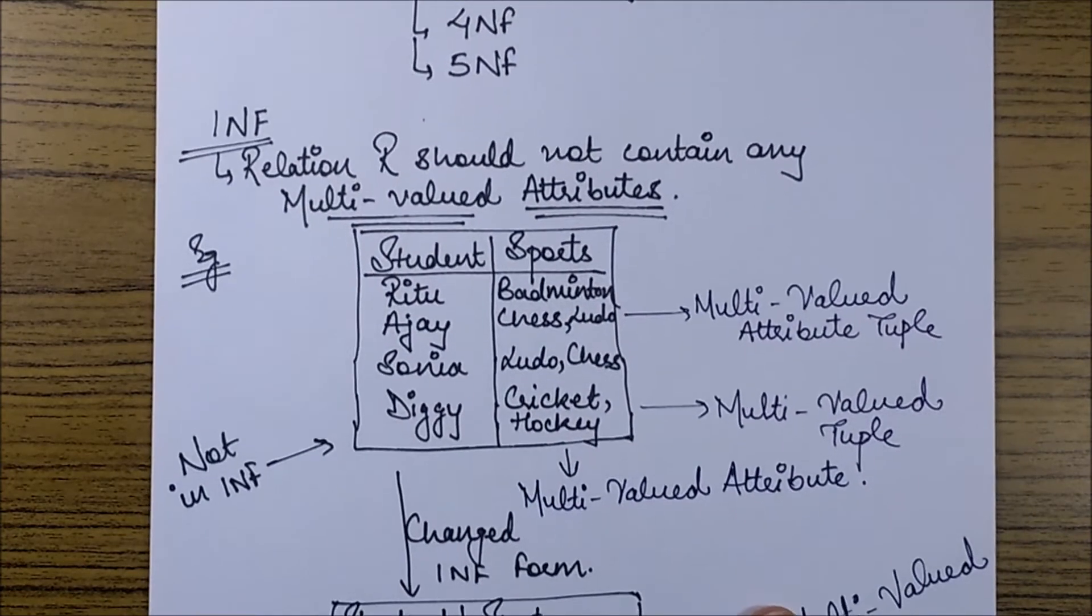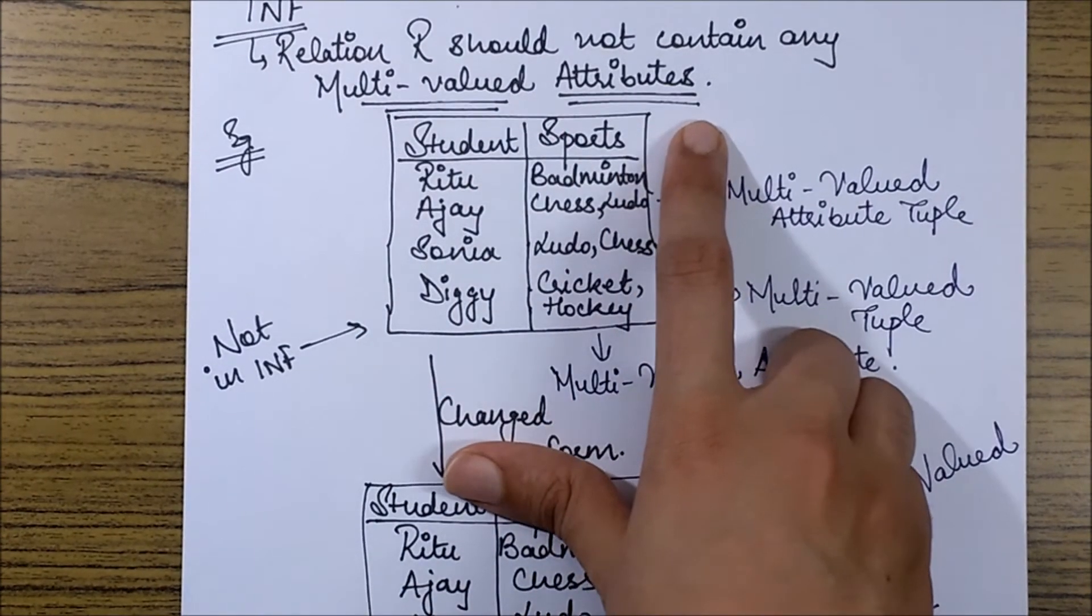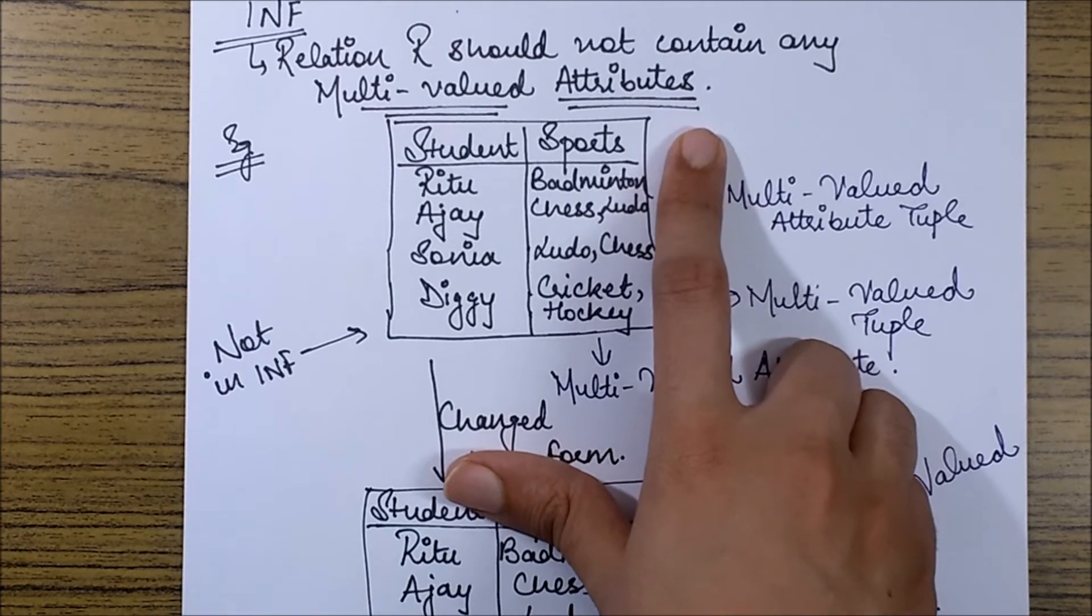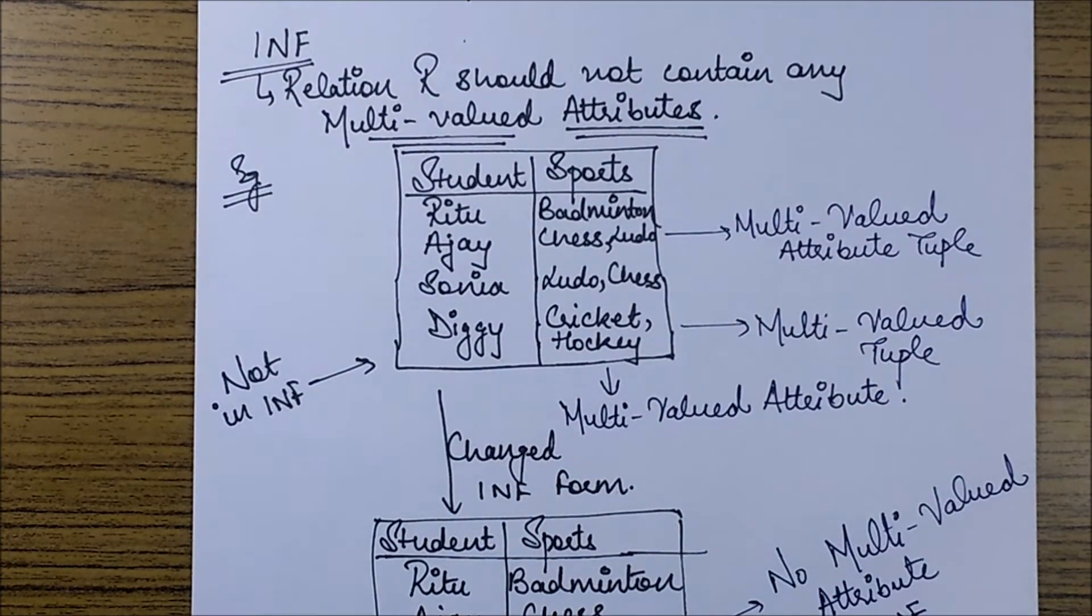Now a relational schema R is said to be in 1NF if it does not contain any multi-valued attributes. So this is the basic rule behind checking whether a table or a relational schema is in 1NF or not.